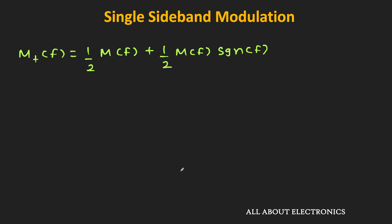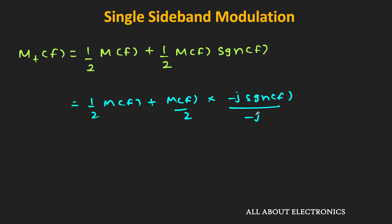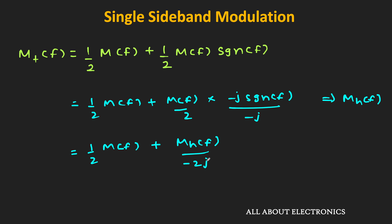So M+(f) = (1/2)·M(f) + (1/2)·M(f)·sgn(f). We can rewrite this as (1/2)·M(f) + M(f)·(−j·sgn(f))/(−2j). Since M(f)·(−j·sgn(f)) = Mh(f), the Hilbert transform of M(f), we can write M+(f) = (1/2)·M(f) + (j/2)·Mh(f).